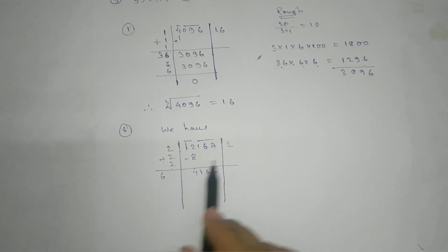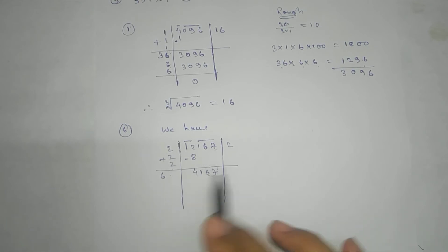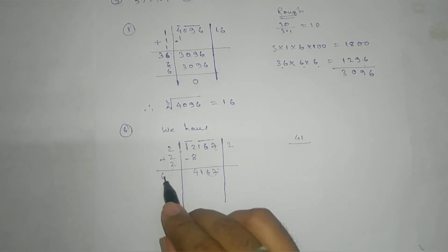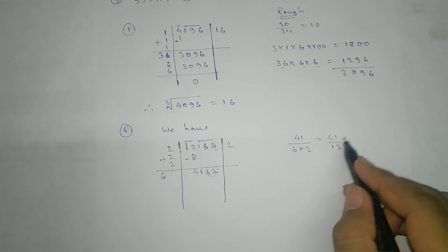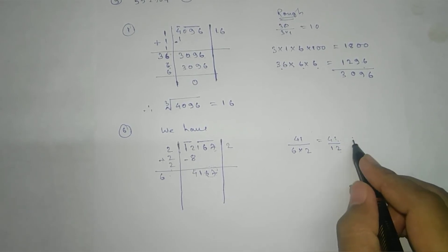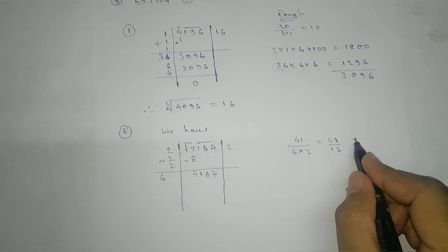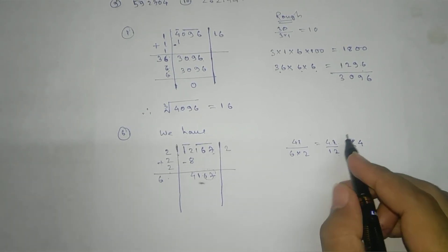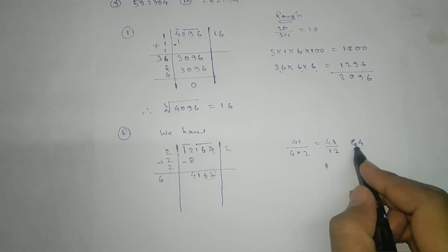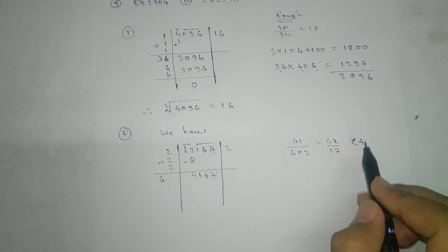Now look: the last digit is 7, so by hit and trial — or leave the last 2 digits — what we have is 41. Take 41; denominator: take 6 into 2, so 41 divided by 12. That gives you — 12 fours is 48, and it is 41 — so it is between 3 and 4, meaning 3 point something. We will not go for the decimal part, we will go for the integral part — that means we will try to take 3.